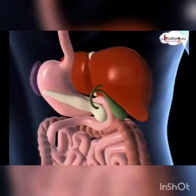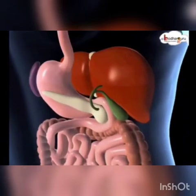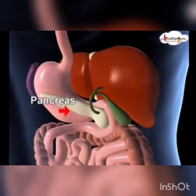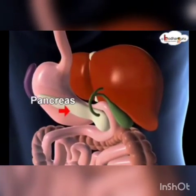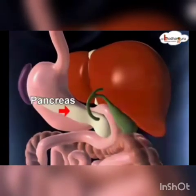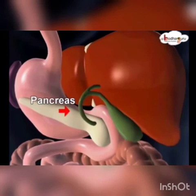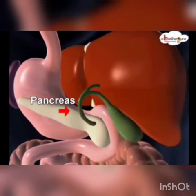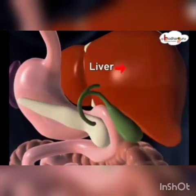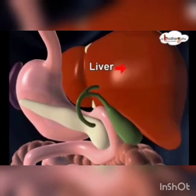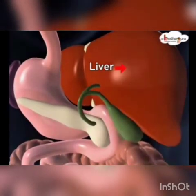The pancreas is a long, flat organ located in the belly that helps with the breakdown of food. The liver helps to filter the blood and stores food energy in the form of glucose — the food is converted into glucose for energy.